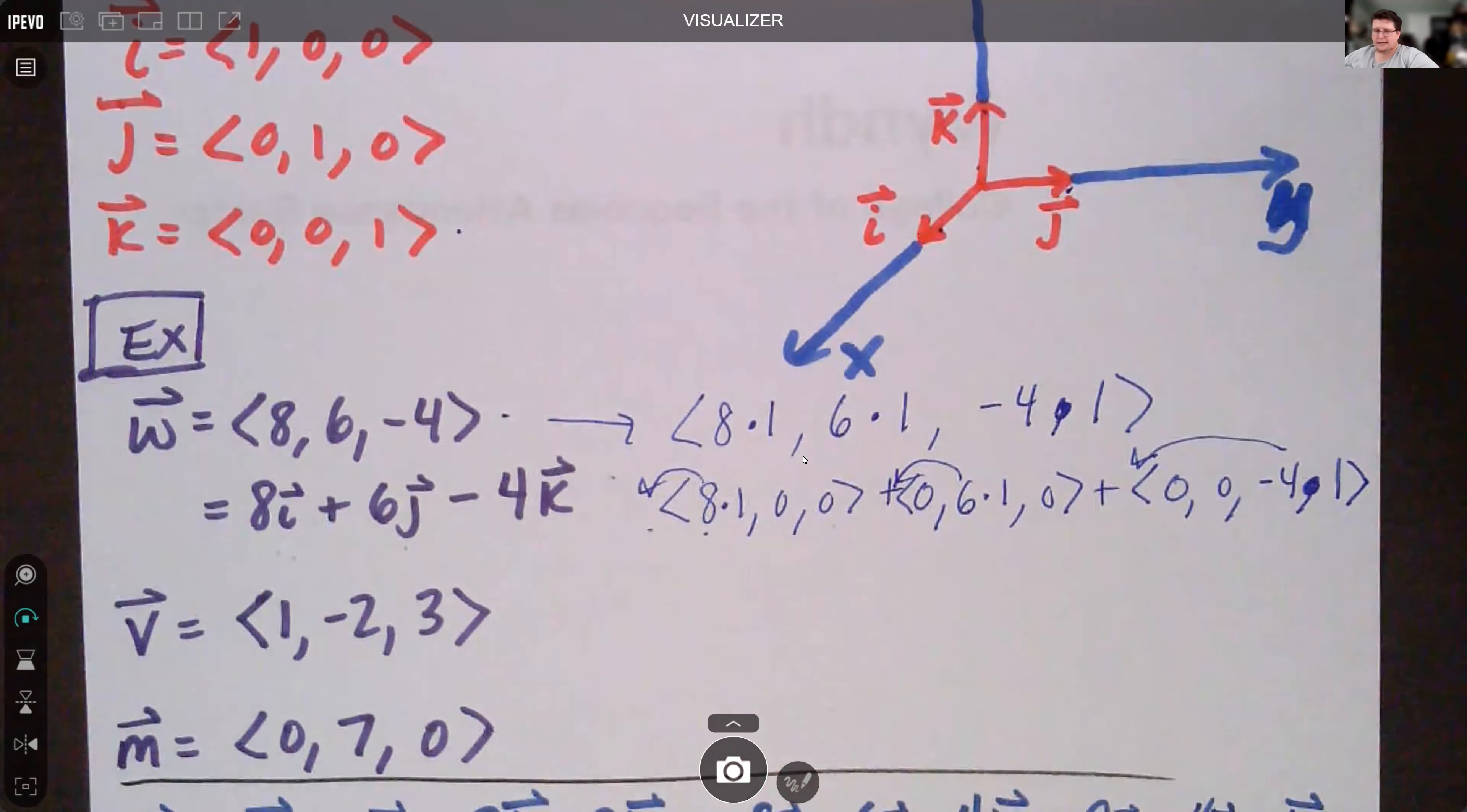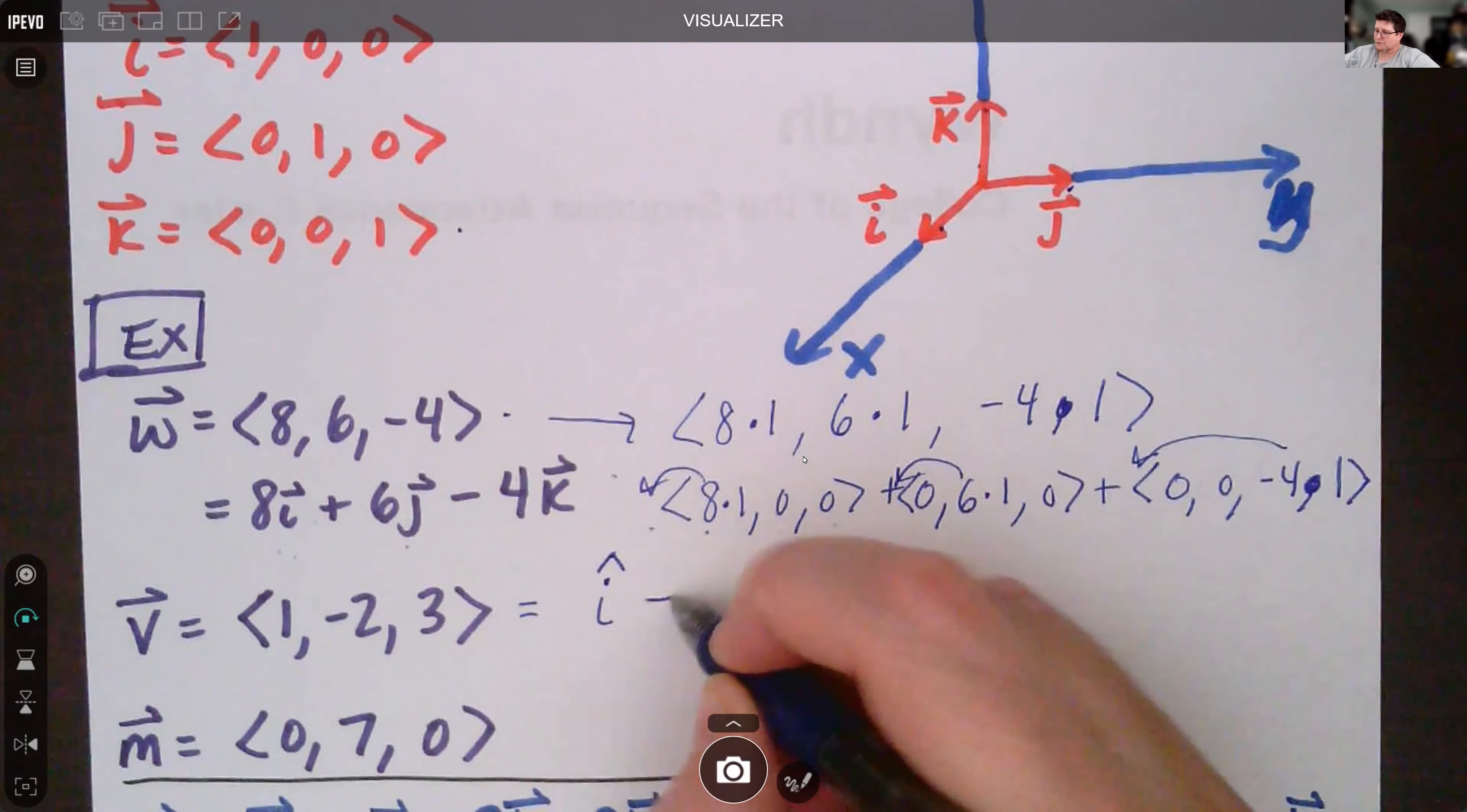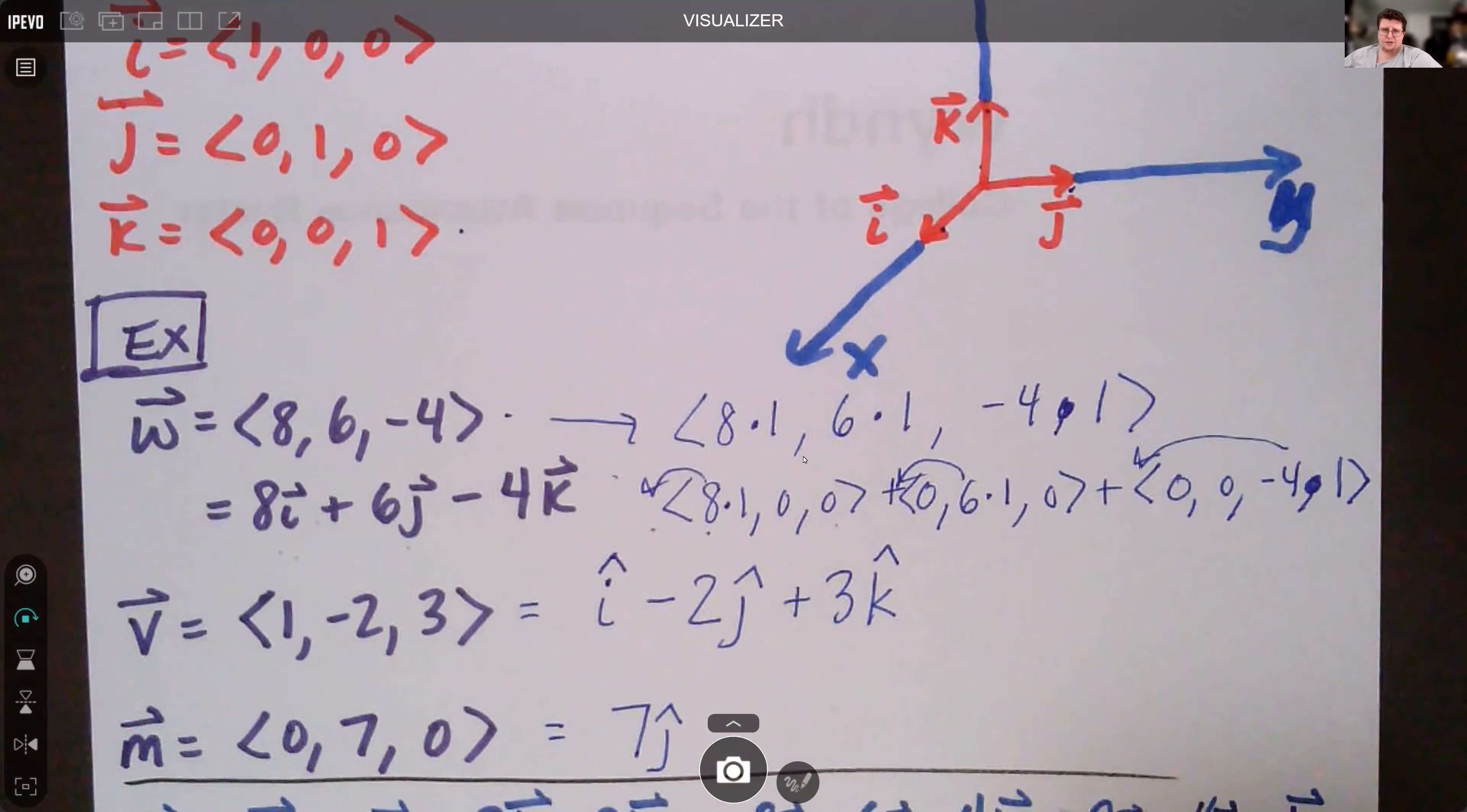So take a second and write these out, v and m. See what you get and I'll do them together with you in five seconds. Alright, so v: I've got one in the x direction, it's one i, or when we only have one of something we just say i. We don't put the one. Next thing we're adding, negative two of the j, or just subtracting j, minus 2j hat. And then we've got three in the z direction, that's plus 3k. For m we've got no i. I've got seven in the y direction, which is 7j, and then I've got nothing in the k. So m is just 7j.